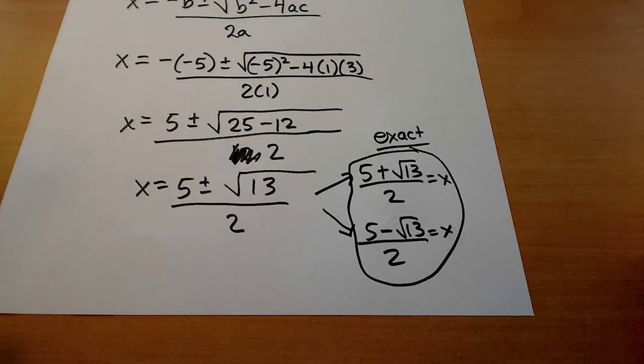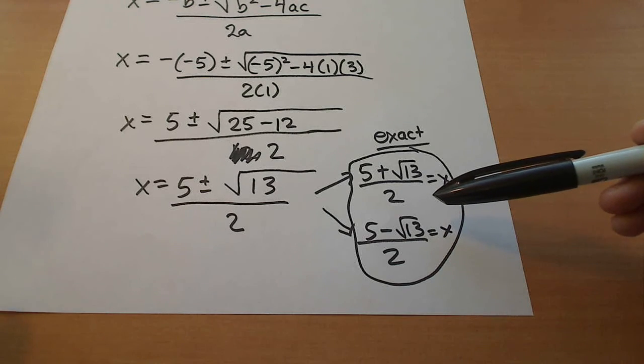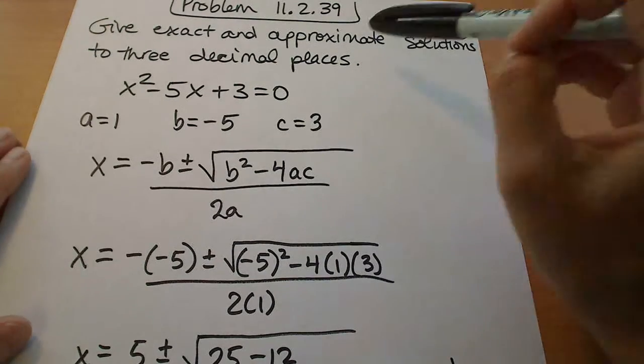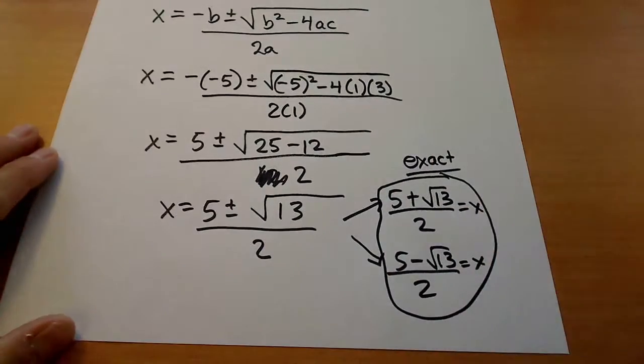The question on this problem was about the approximate solutions. And the way that we get the approximate solutions is we take those radicals and we put them into our calculator and get some decimals for them. So they did ask us here to find the approximate solutions to three decimal places.